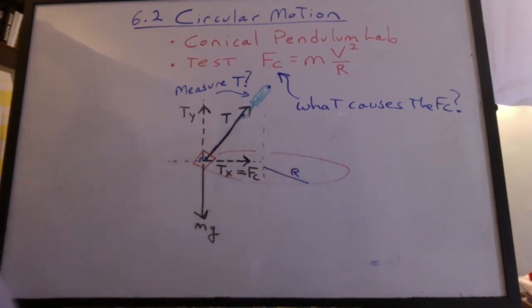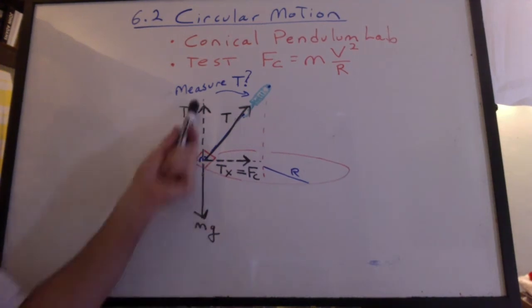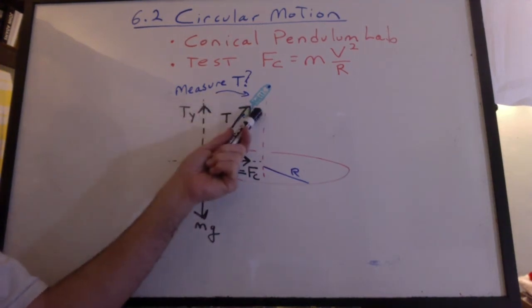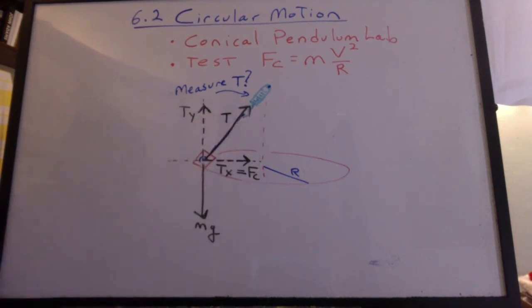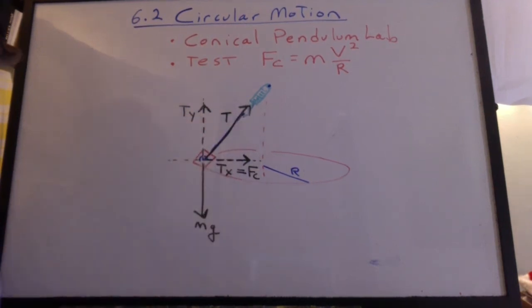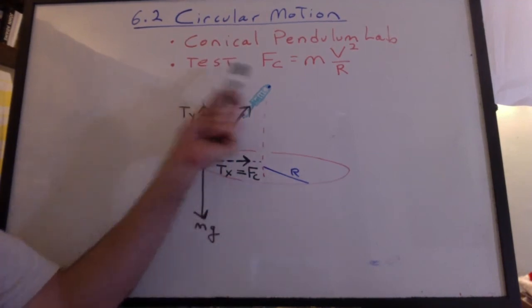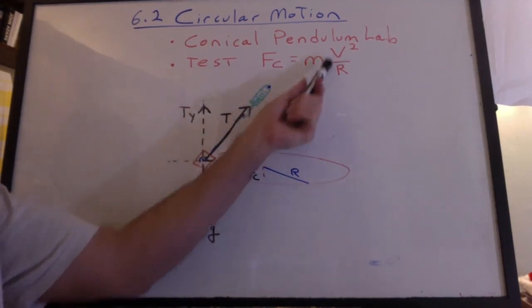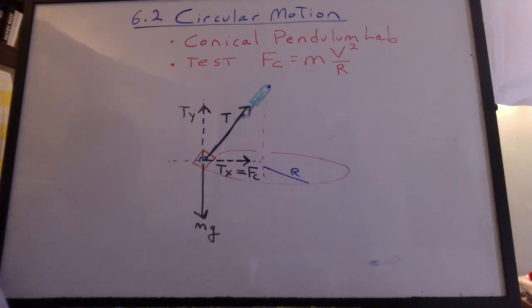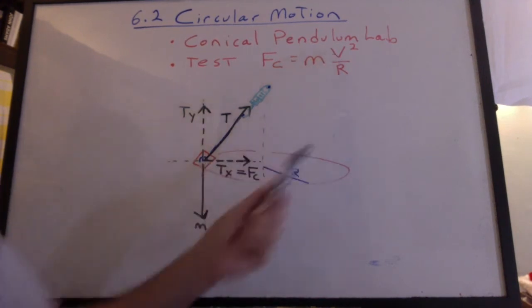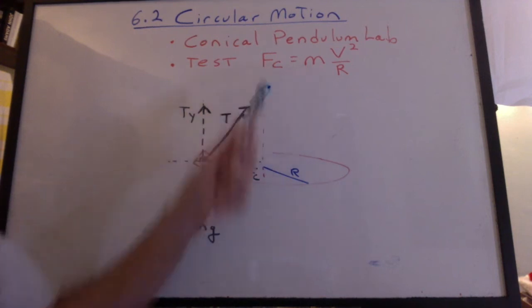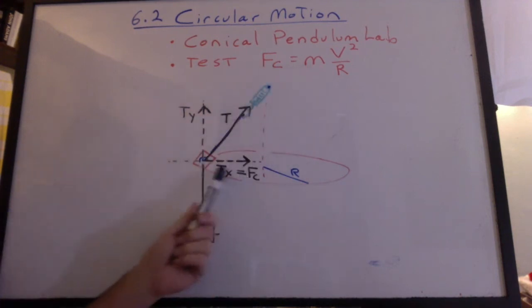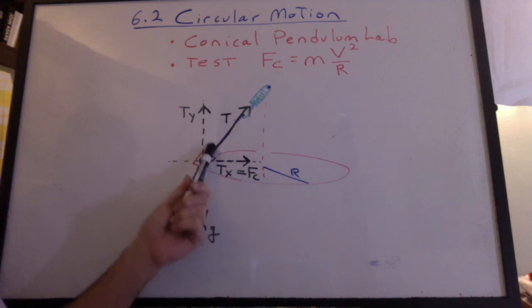And lastly we can measure the tension in the string with the spring scale, but that meant grabbing it at the very end, and that's where we get a lot of error. Well let's remember the goal now, to test Fc equals m v squared over r. One thing we could do is measure that velocity, we have the radius, we can measure the mass, and we can calculate the Fc.